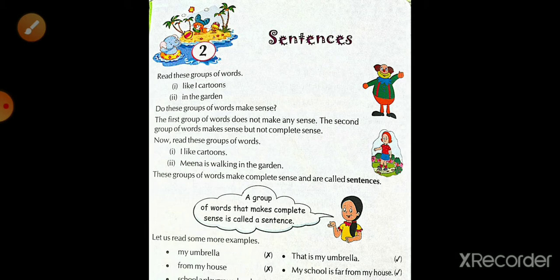First of all, we read this group of words. First one is like eye cartoons. Second one is in the garden. Students, we have two sentences. The first group of words does not make any sense. This second group of words makes sense, but not complete sense.